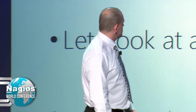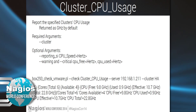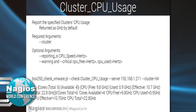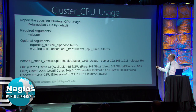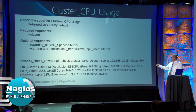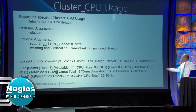Let's look at the checks. For vCenter-oriented checks and cluster checks, starting off we have cluster CPU usage. You have to have the cluster name, you can have optional arguments for CPU speeds, your warning and critical values. Here's the command - the plugin, the check cluster CPU usage, the actual vCenter server we're talking to, and the name of the cluster. That's the output, and it's got performance data.